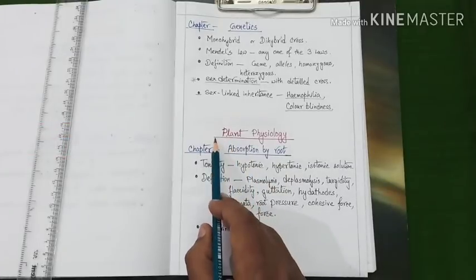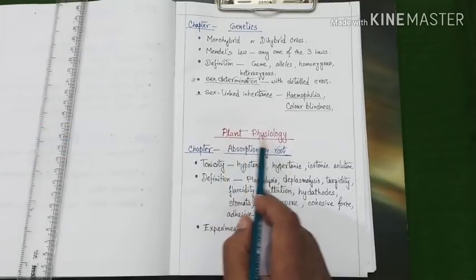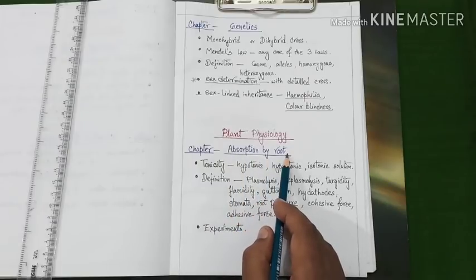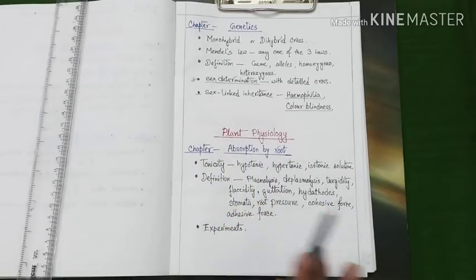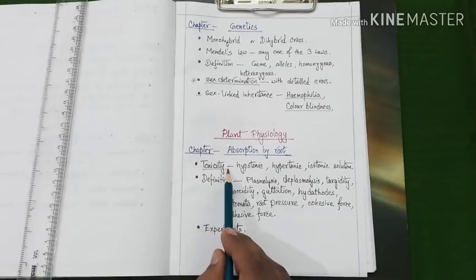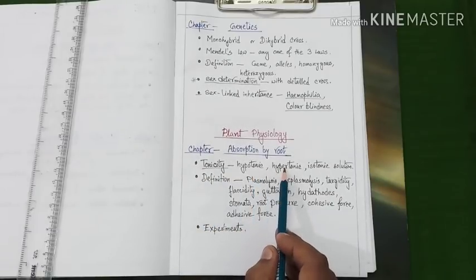Next, our next unit is plant physiology and the first chapter under this unit is absorption by root. Now let us know the different important topics under this chapter. First, tonicity. That means hypotonic, hypertonic, and isotonic.